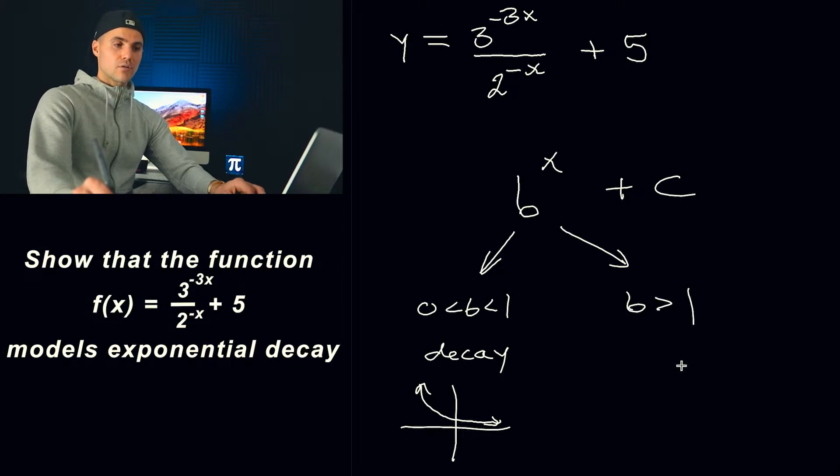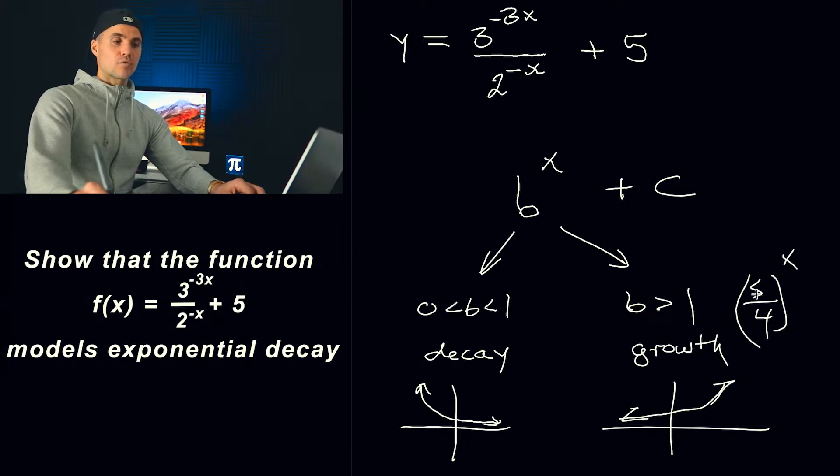and so if b is greater than 1 the other scenario then what's going to happen is it's going to be a growth function. Okay so it's basically going to be looking something like this and sometimes this b value can be in fractions right so like 5 over 4 for example you got to be careful 5 over 4 to the power of x that's a growth function because 5 over 4 is greater than 1